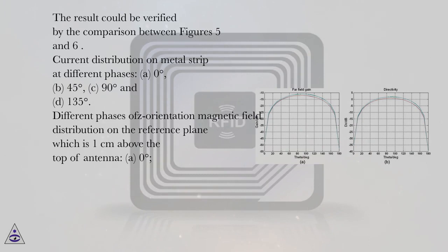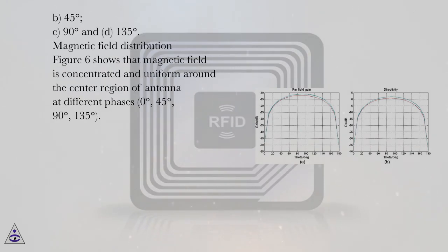Different phases of z-orientation magnetic field distribution on the reference plane which is 1 cm above the top of antenna: A, 0 degrees; B, 45 degrees; C, 90 degrees; and D, 135 degrees.